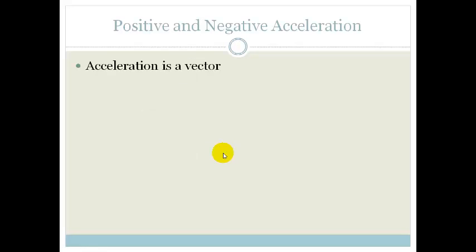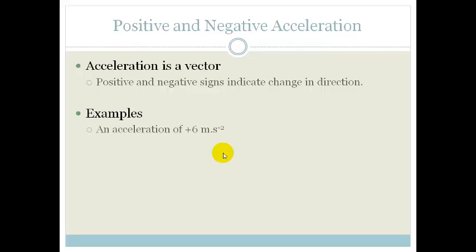Now you need to understand that acceleration is a vector, and therefore we get positive and negative acceleration. But it indicates change in direction. So for example, an acceleration of 6 meters per second, which is positive, means that the velocity is increasing in the positive direction. So if we decided that right was positive, then this means that the guy is accelerating at 6 meters per second squared in the right direction, towards the right.